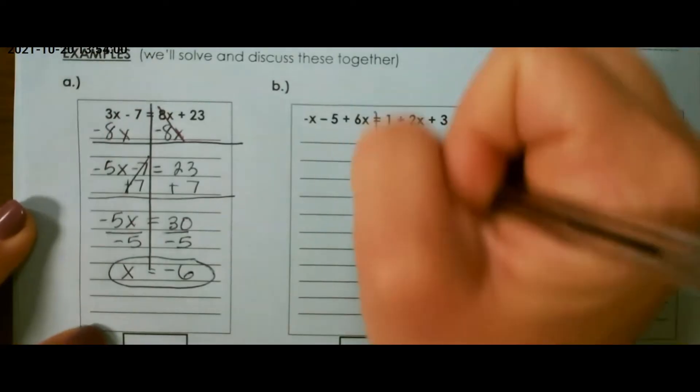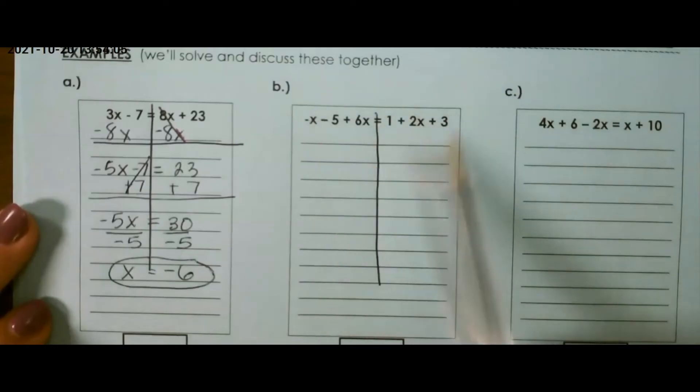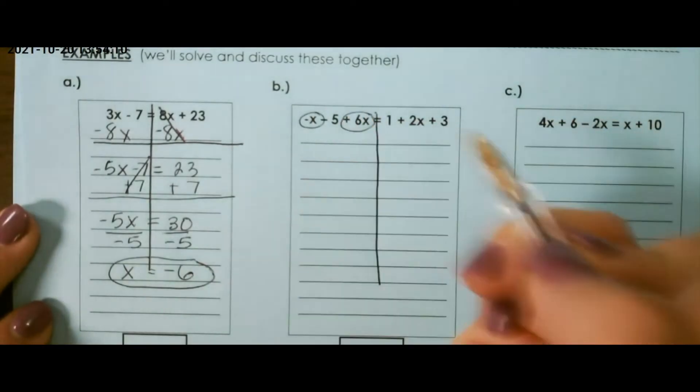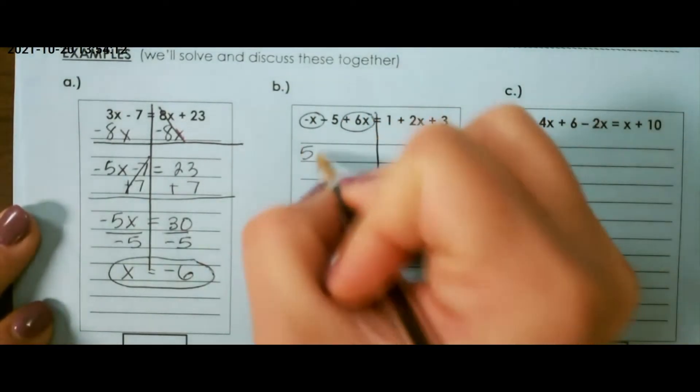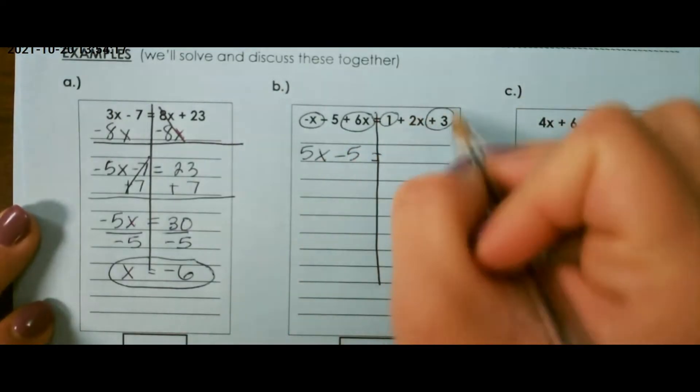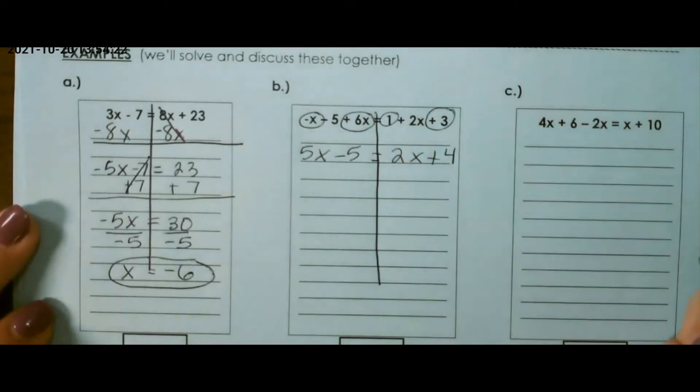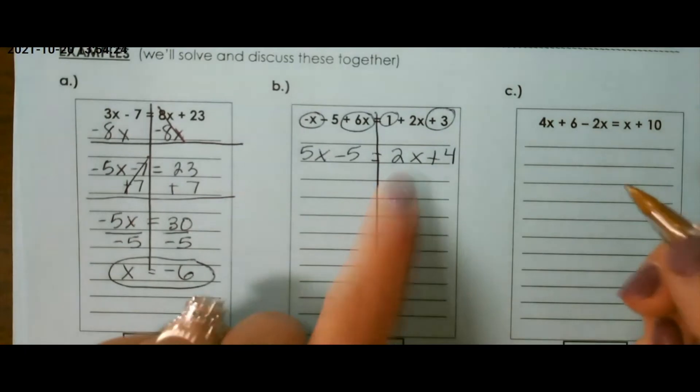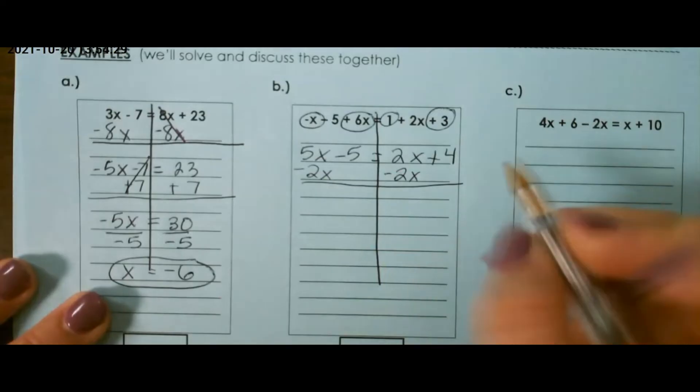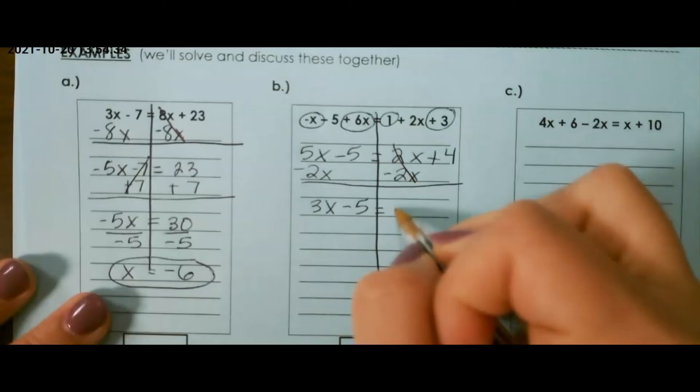For our next example, we want to start this time by combining any like terms we have on either side. I can combine negative x and 6x, which will give me 5x. I can combine 1 and 3, which will give me 4. Then, I'm going to take the variable from the right side over to the left side. So, that would give me 3x minus 5 equals 4.